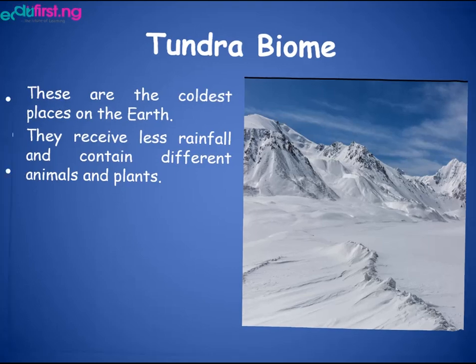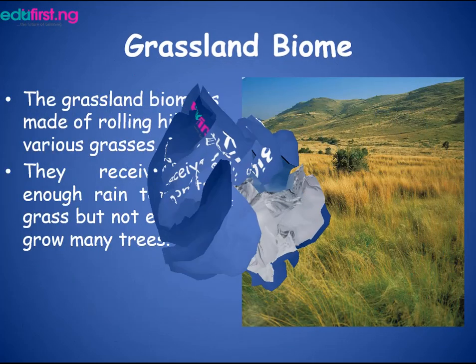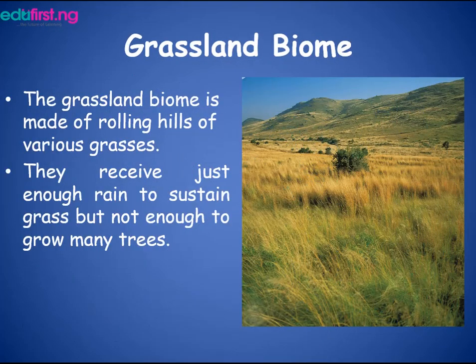The next is the grassland biome. The grassland biome is made of rolling hills of various grasses. They receive just enough rain to sustain grass but not enough to grow many trees.